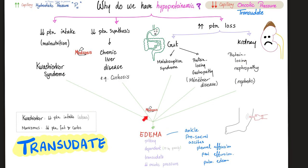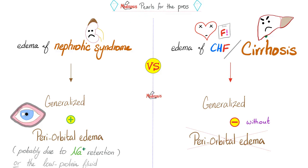You end up with edema, which is pitting dependent transudate due to decreased oncotic pressure. In nephrotic syndrome you have generalized edema. CHF and cirrhosis also have generalized edema. What's peculiar to nephrotic syndrome is the periorbital puffiness, swelling, or edema.